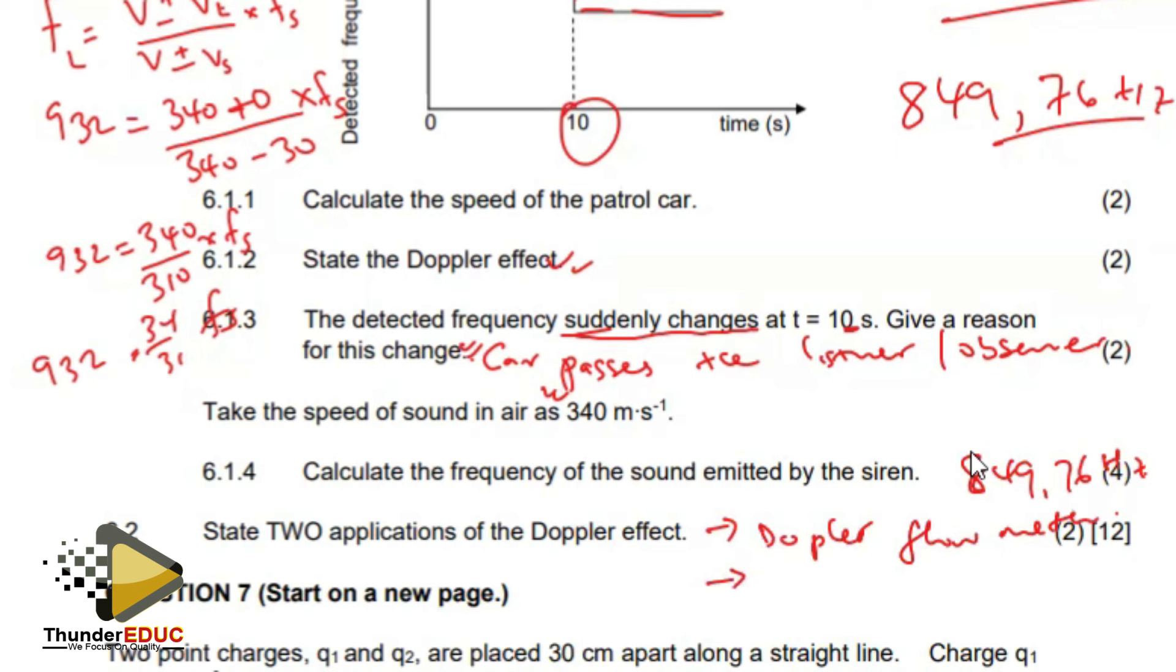Two applications: in the Doppler flow meter, and then we also said they can be used in the speed radars to detect those speed cameras and things.